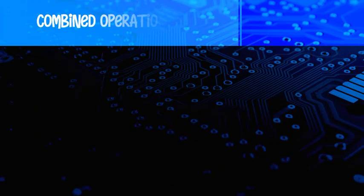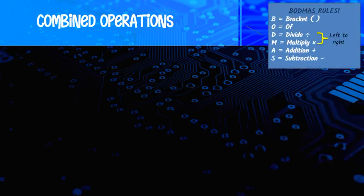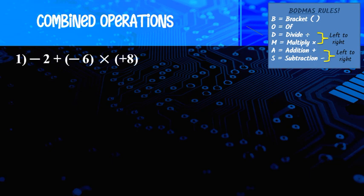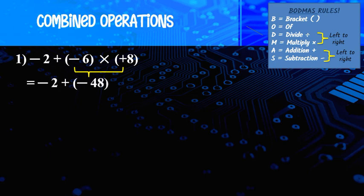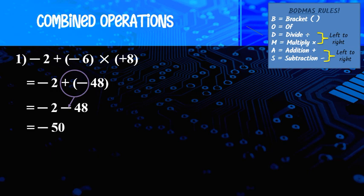Next: combined operations. For combined operations we also use the BODMAS rule — bracket, divide, multiply, addition, subtraction. Example: negative 2 plus (negative 6 times positive 8). We have plus and times, so BODMAS says solve times first. Negative 6 times positive 8 equals negative 48. Copy the negative 2 from the front. Then: plus minus changes to minus — negative 2 minus 48 — same sign, plus the number — so the answer is negative 50.